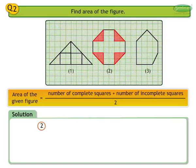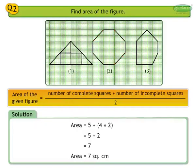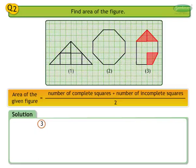Number 2 solution: In the figure there are 5 complete squares and 4 incomplete squares. Area equals 5 plus 4 divided by 2, equals 5 plus 2, equals 7 square centimeters. Number 3 solution: In the figure there are 3 complete squares and 3 incomplete squares. Area equals 3 plus 3 divided by 2, equals 3 plus 1.5, equals 4.5 square centimeters.